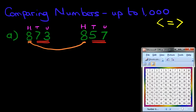So now we are comparing numbers 73 and 57. Forget about the 800 because they are the same in both numbers. Find 73 on the number grid. Got it? Great.